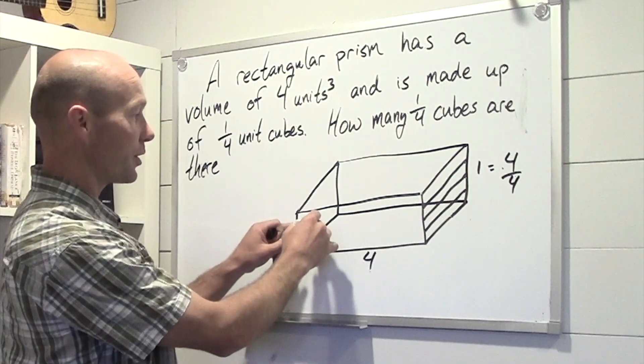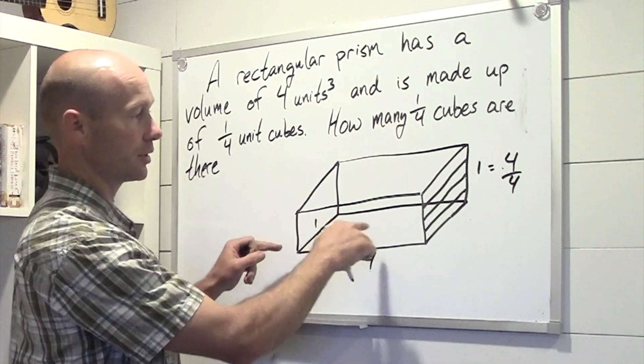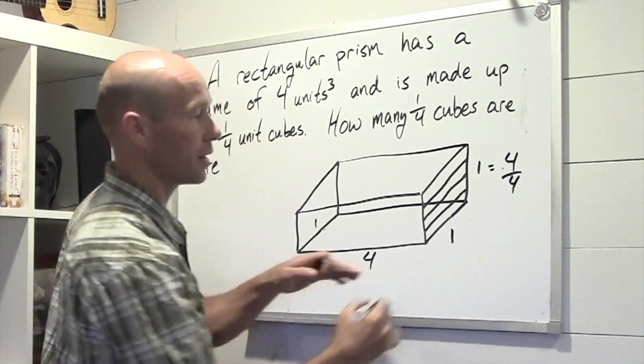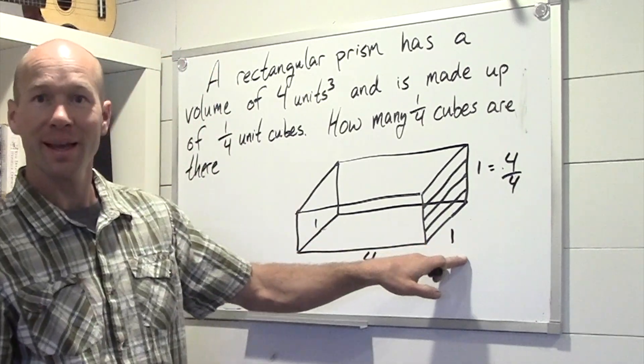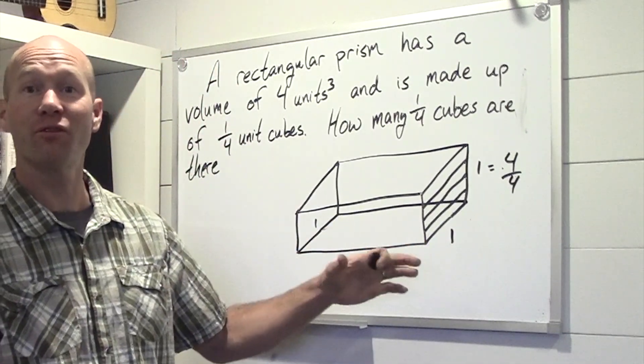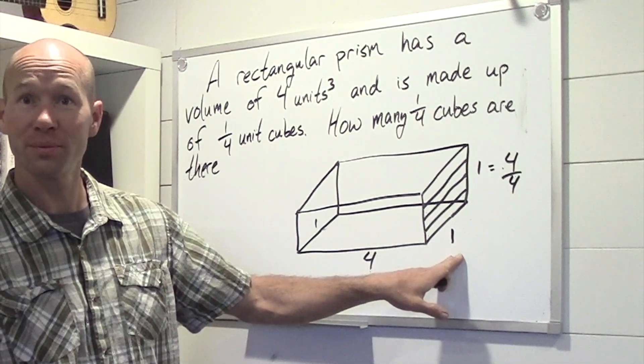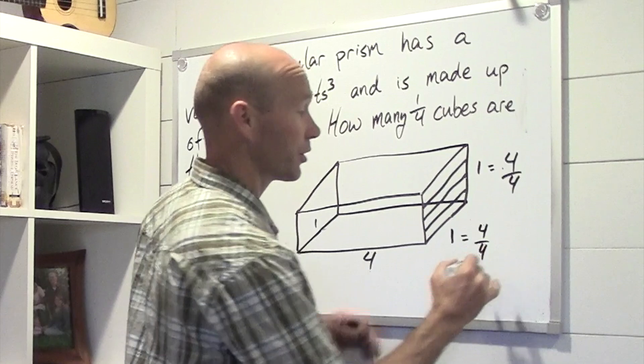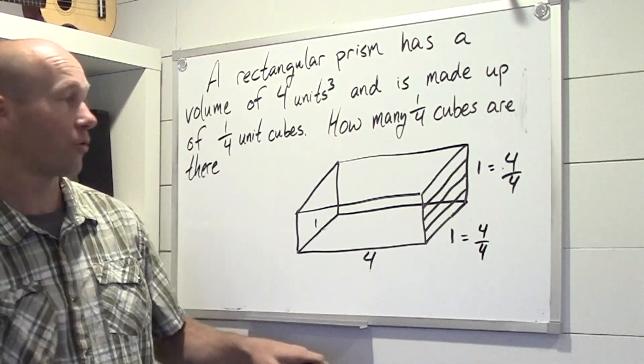Now this side here, this edge right here is the same as this one. So we have another 1 at the bottom there. And how many 1/4ths are in 1 whole? Again, 1 equals 4/4ths. 1 whole is 4/4ths.